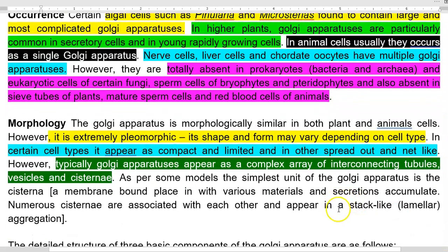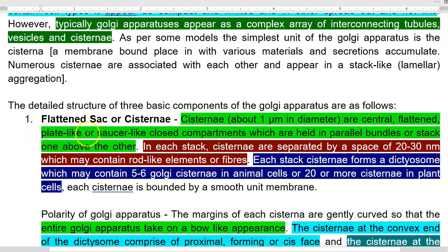Next, we look into the morphological forms of the Golgi apparatus. As we already know, it is mainly composed of cisternae as well as vesicles. These structures are highly pleomorphic — they commonly change their shape depending upon the cell type. In certain cell types they appear as a very compact structure, whereas in some they spread out with a net-like appearance. Typically, Golgi apparatus appears as a complex array of interconnecting tubules, vesicles, and cisternae.